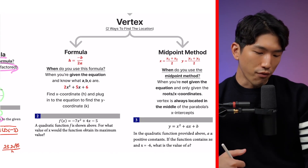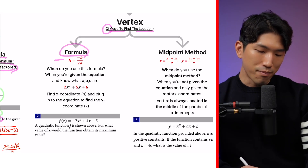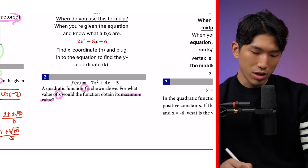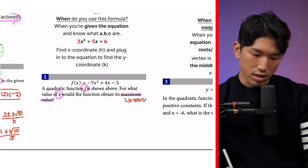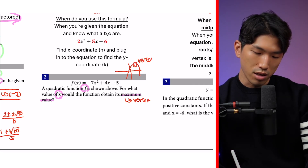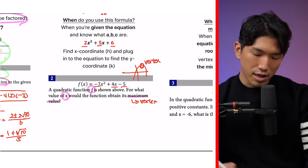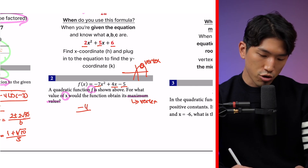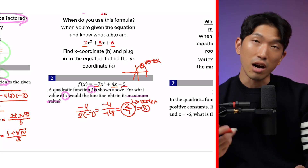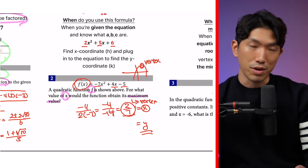The next two types test you on vertex. Vertex is very popular, and you need to know two separate ways to find its location. The first is using the formula negative b over 2a. For example: for what value of x would the function obtain the maximum value? For a parabola, the maximum value is at the vertex. To find it, we plug into negative b over 2a — negative 4 over 2 times negative 7 — which gives positive 2 over 7. That's the x-coordinate of the vertex. To find the y-coordinate, plug 2/7 back into the equation.